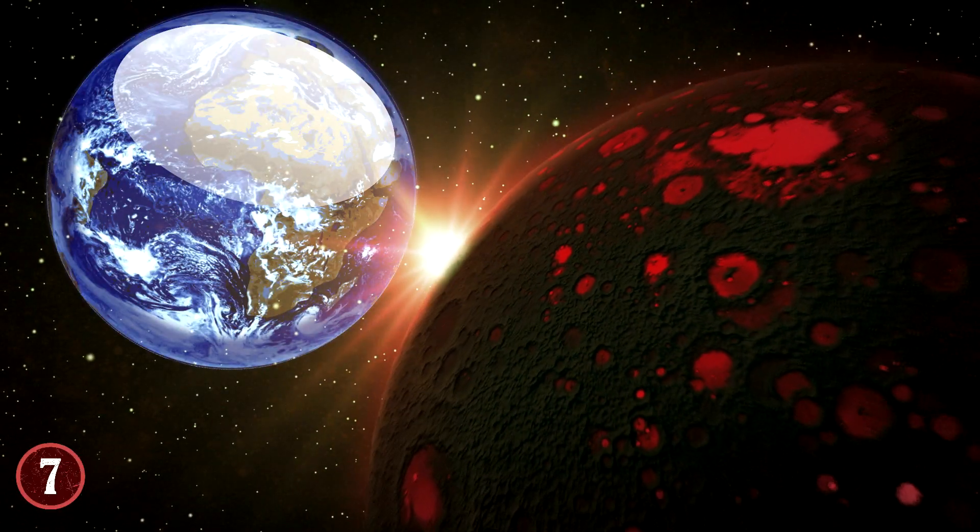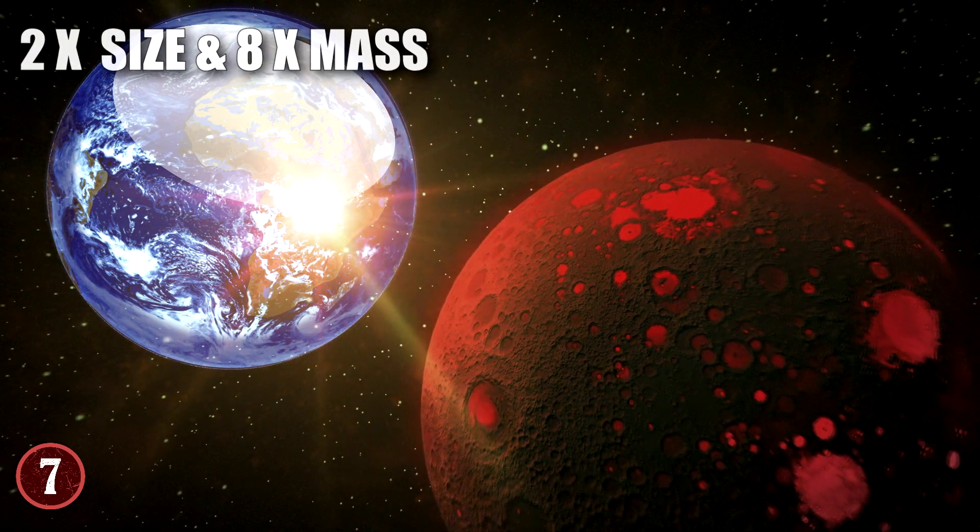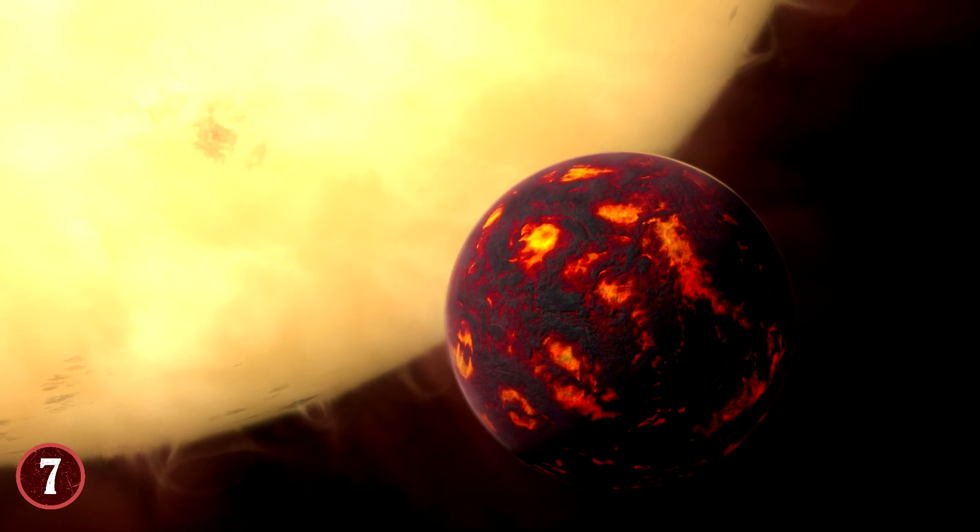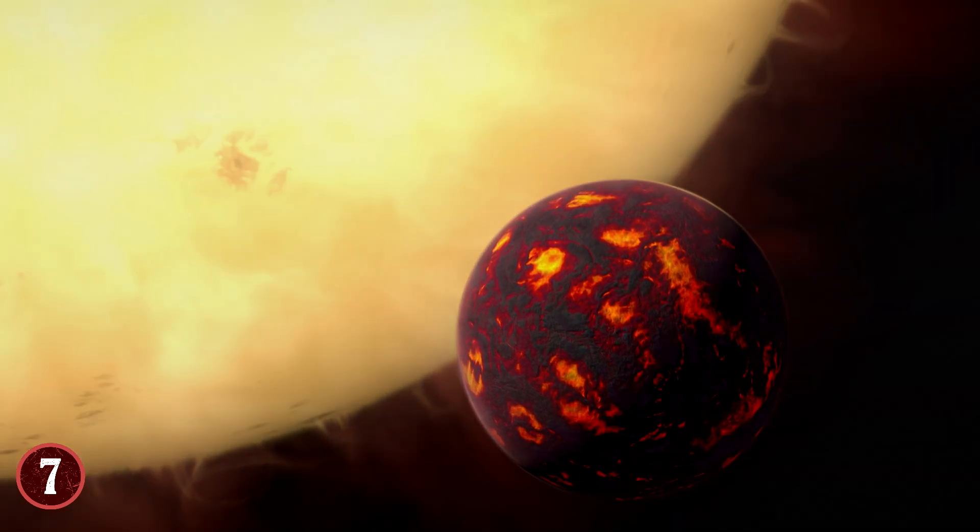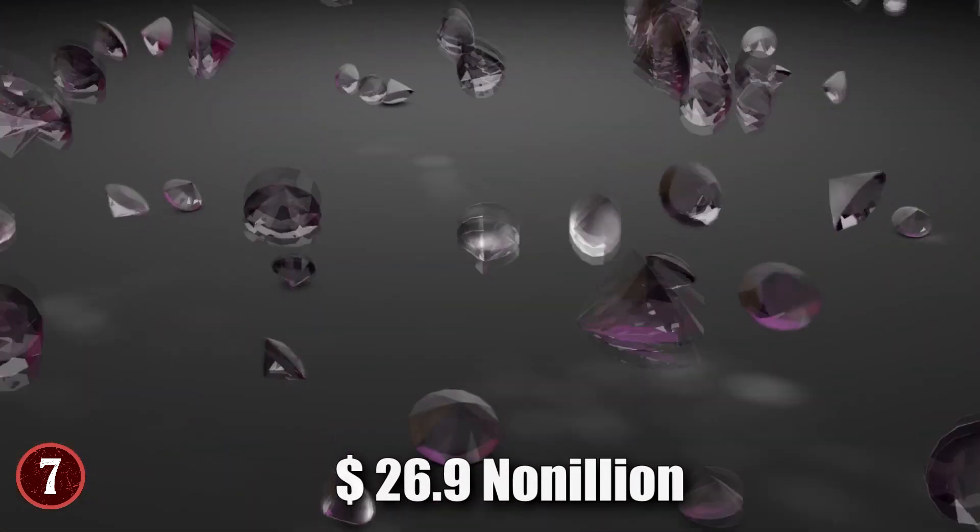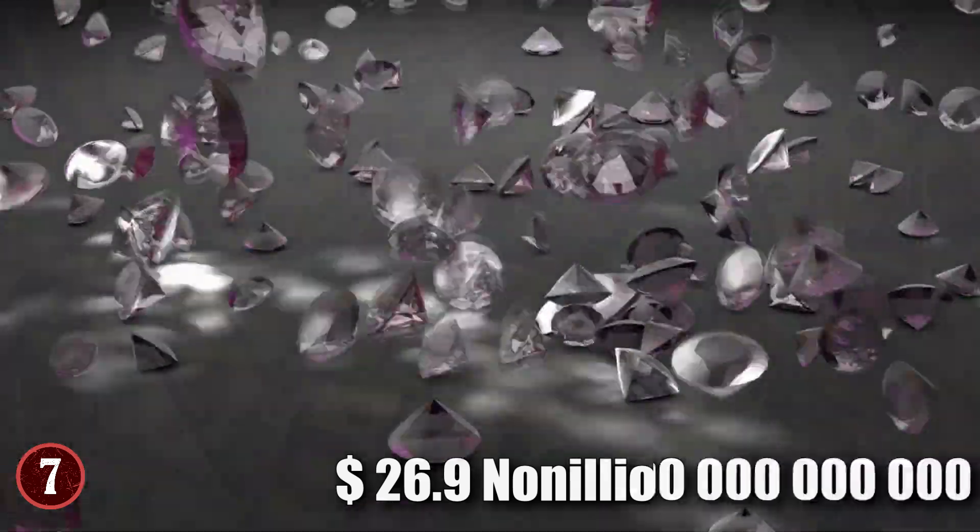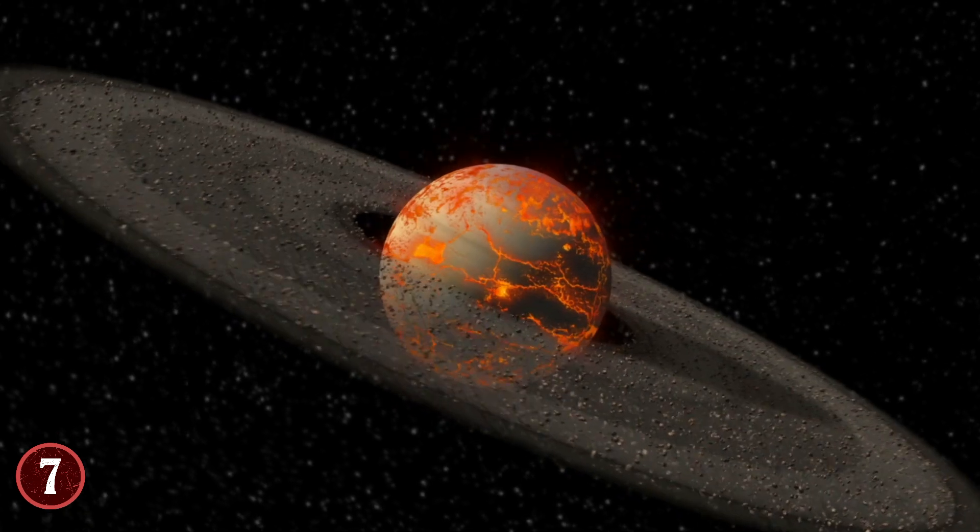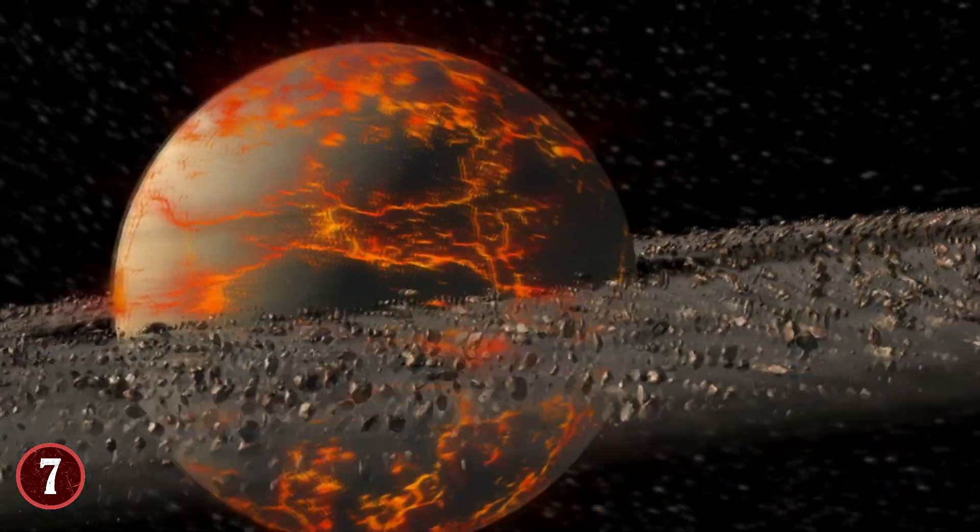55 Cancri-E is twice the size and eight times the mass of Earth. When you do the math on the planet's size and the value of the diamond at current pricing, you get $26.9 nonillion dollars worth of diamonds, 30 zeros in that number, making this one of the most valuable planets out there.